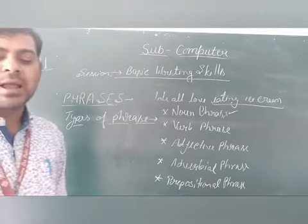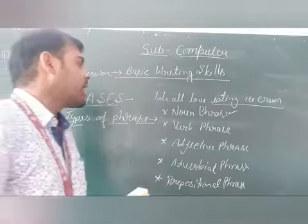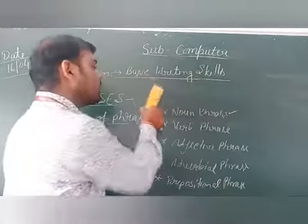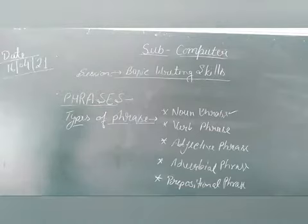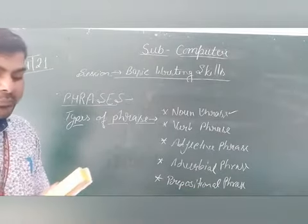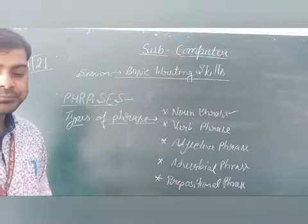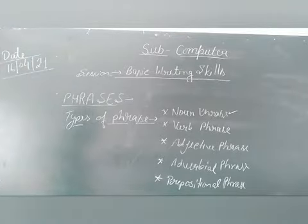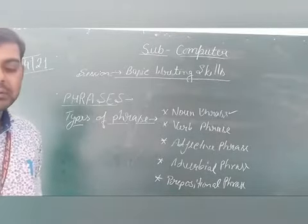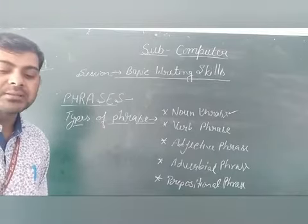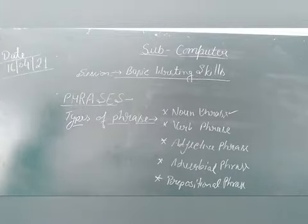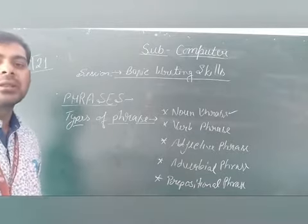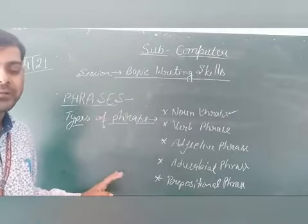A Verb Phrase is a group of main verbs and helping verbs. For example: 'This jewelry may be worth millions of rupees.' Wherever you find a helping verb and a main verb together, that is a Verb Phrase.